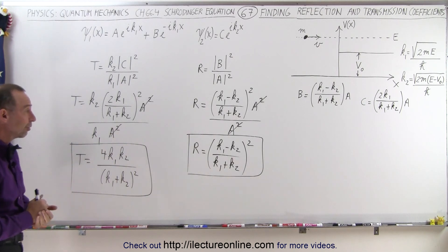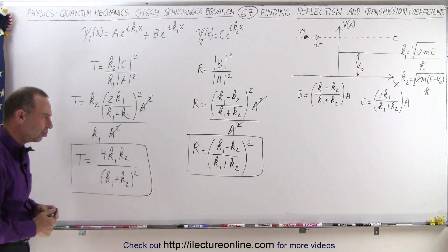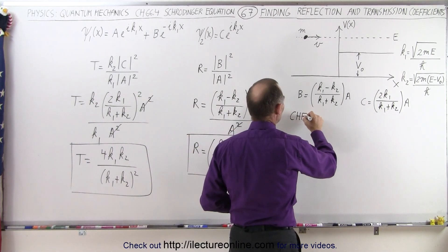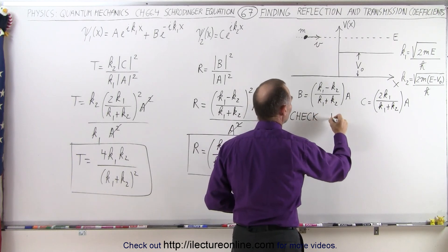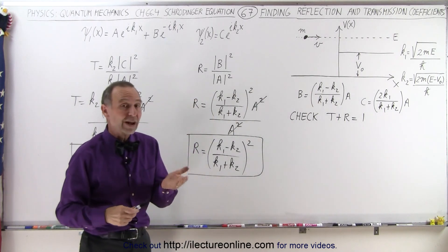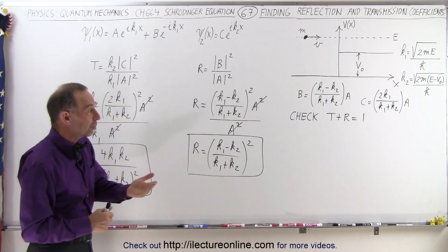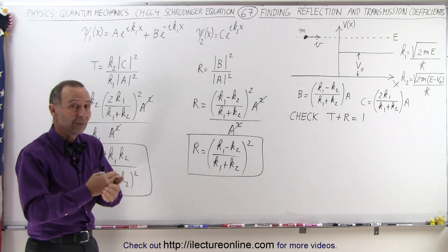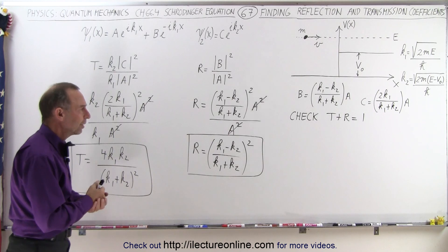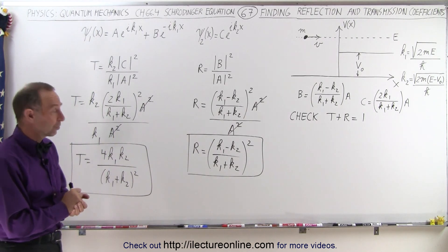Now we have expressions for both the reflection and transmission coefficients. We can check whether they are correct by verifying that T plus R must equal 1. If T is the fraction of all particles transmitted and R is the fraction reflected, together they should account for all the particles and add up to 1.